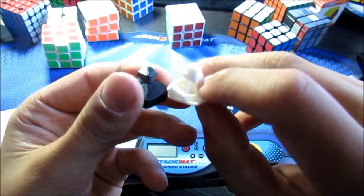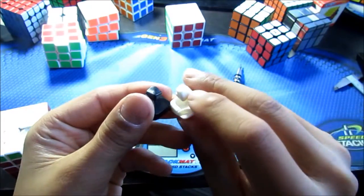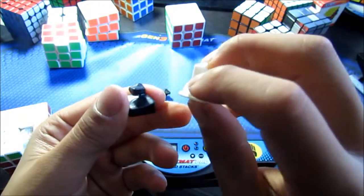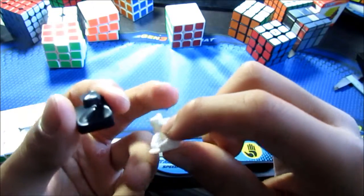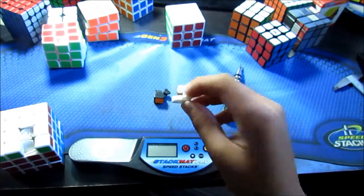On the left is the Shengshou version 5. The Weisu, I mean the Aosu, kind of has this thing poking out like the Shengshou version 3.